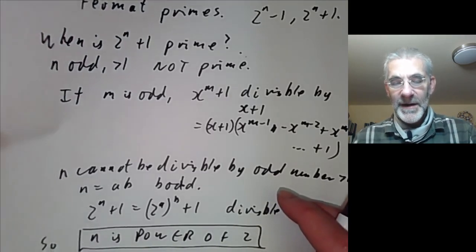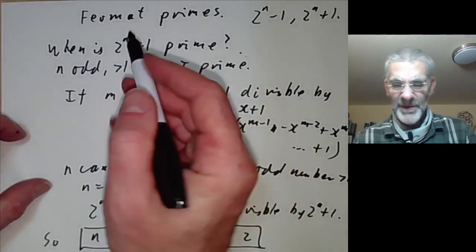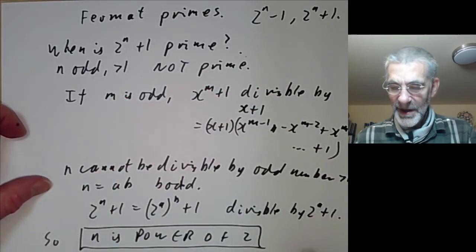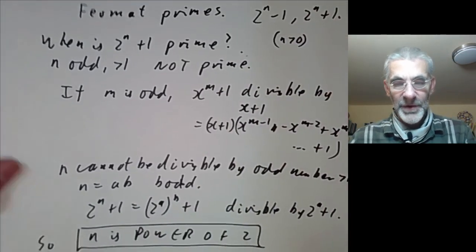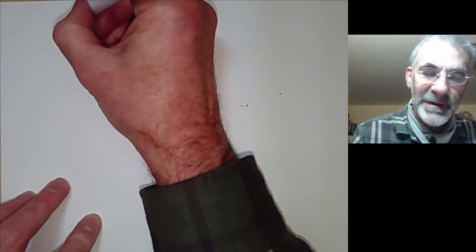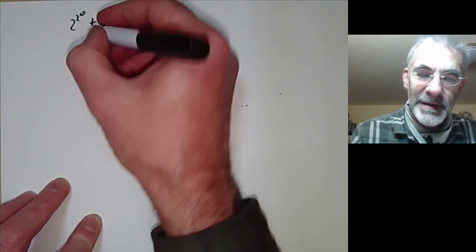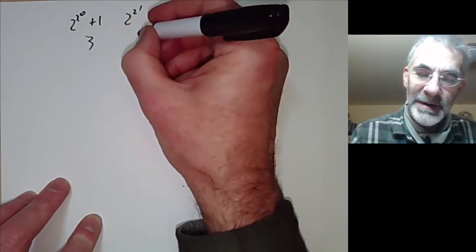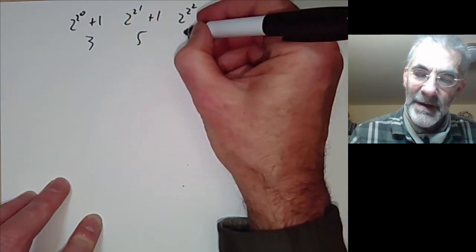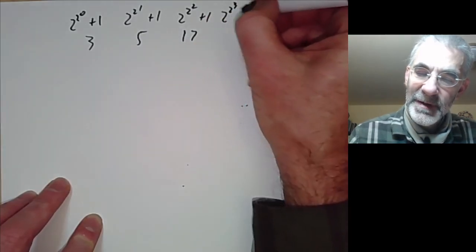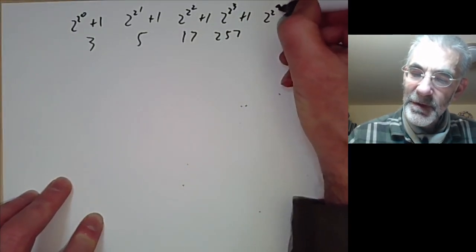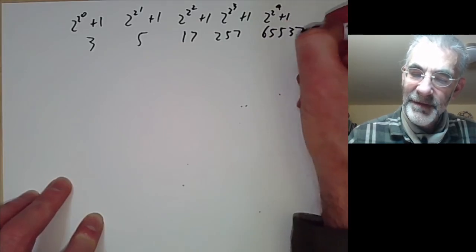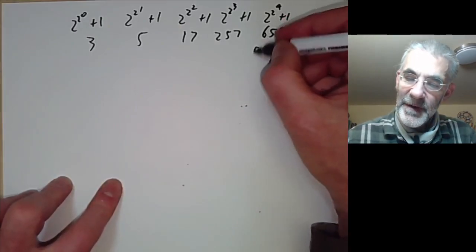So Fermat investigated these numbers where n is a power of 2. The first few cases: 2 to the 2^0 plus 1 is 3; 2 to the 2^1 plus 1 is 5; 2 to the 2^2 plus 1 is 17; 2 to the 2^3 plus 1 is 257; 2 to the 2^4 plus 1 is 65537. These are the so-called Fermat primes, and Fermat checked they are prime.